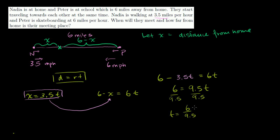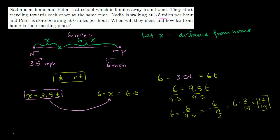So 6 = 9.5t. Dividing both sides by 9.5 gives t = 6/9.5. Rewriting 9.5 as 19/2, this becomes 6 times 2/19, which equals 12/19 of an hour. That's how long it will take them to meet.